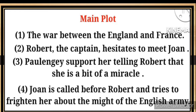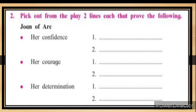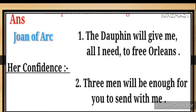Joan is called before Robert and tries to frighten her about the might of the English army. Second, pick out from the play two lines each that prove the following — Joan of Arc: her confidence, her courage, her determination. Answer: Joan of Arc's confidence — first: 'The Dauphin will give me all I need to free Orleans.'